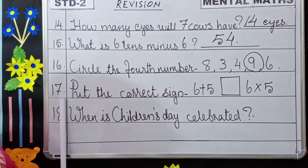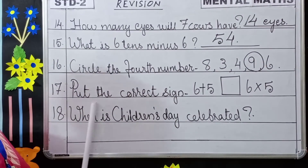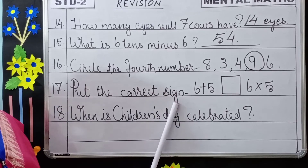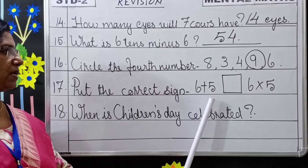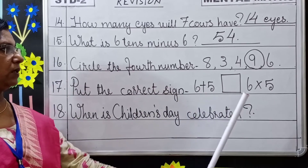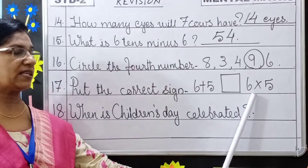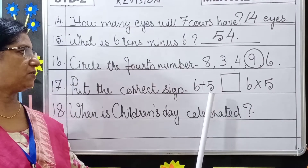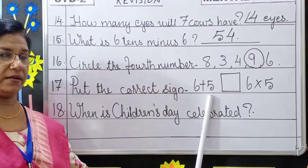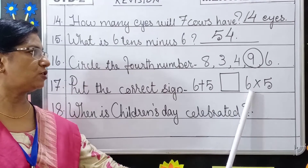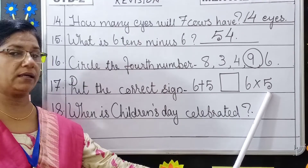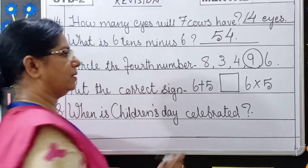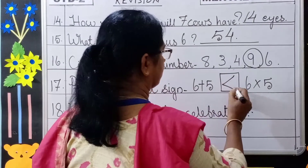Question number 17: Put the correct sign. Here we have 6 plus 5 and here we have 6 into 5. 6 plus 5 is 11. 6 into 5 is 30. Which one is greater, children? 6 into 5 is greater.